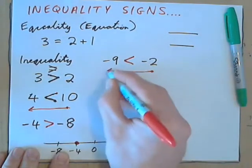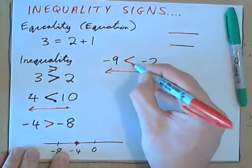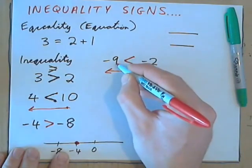So, negative 9 is less than negative 2. And read in this direction, for fun. Negative 2 is greater than negative 9. Okay?